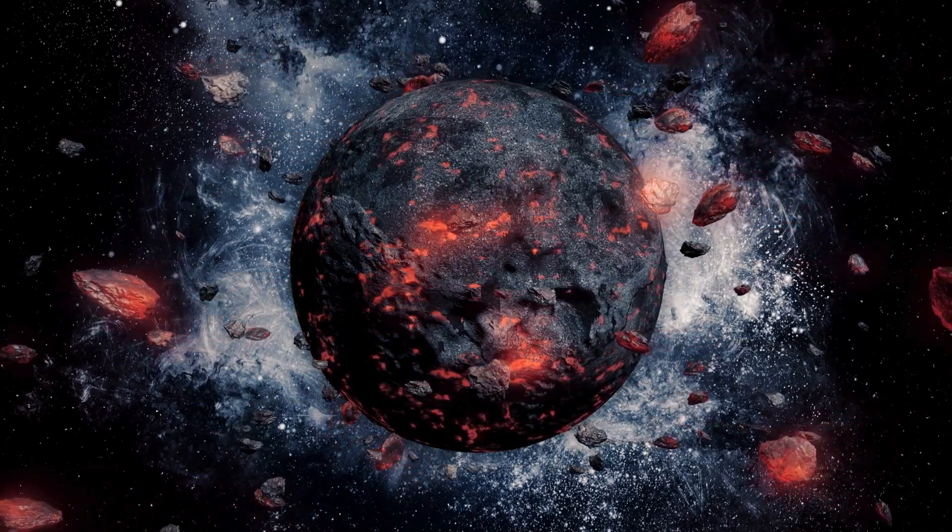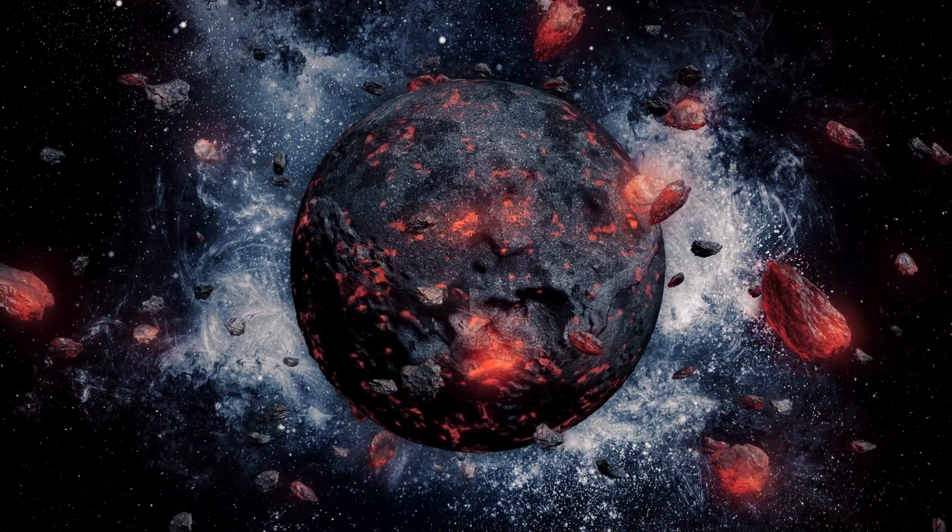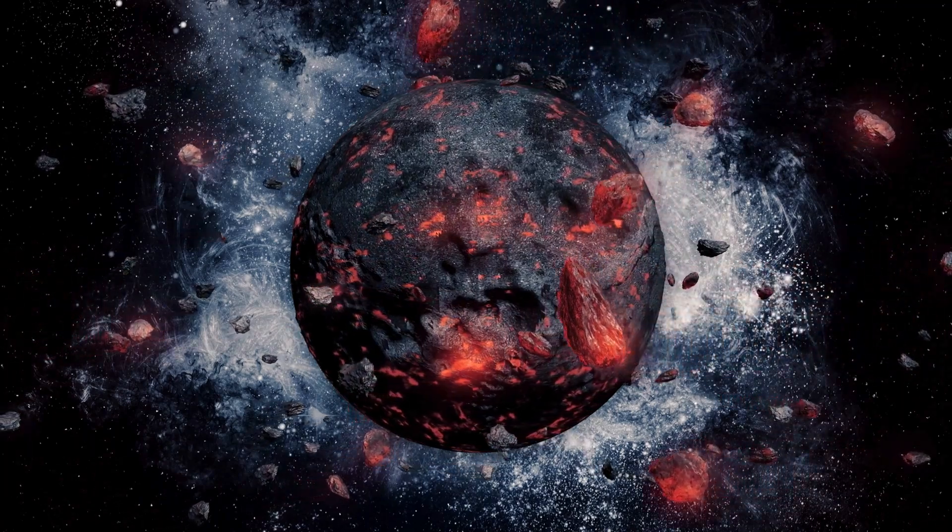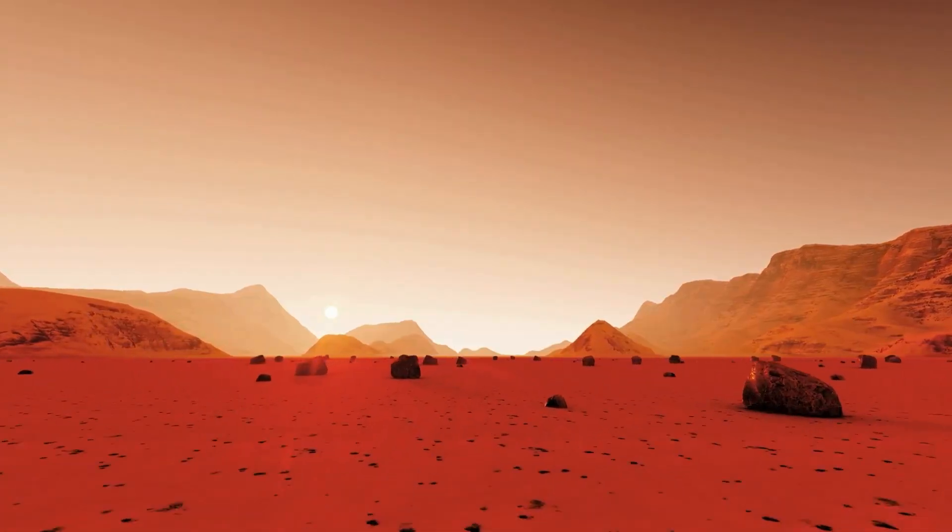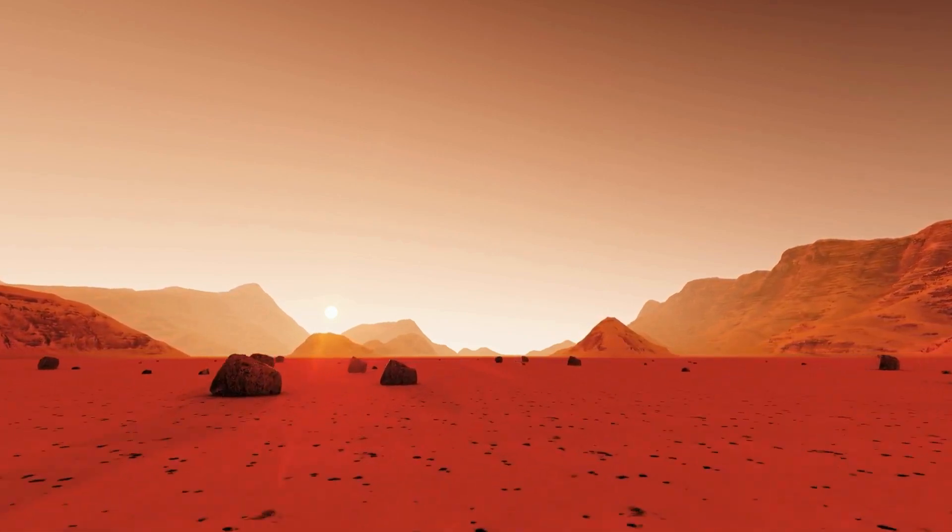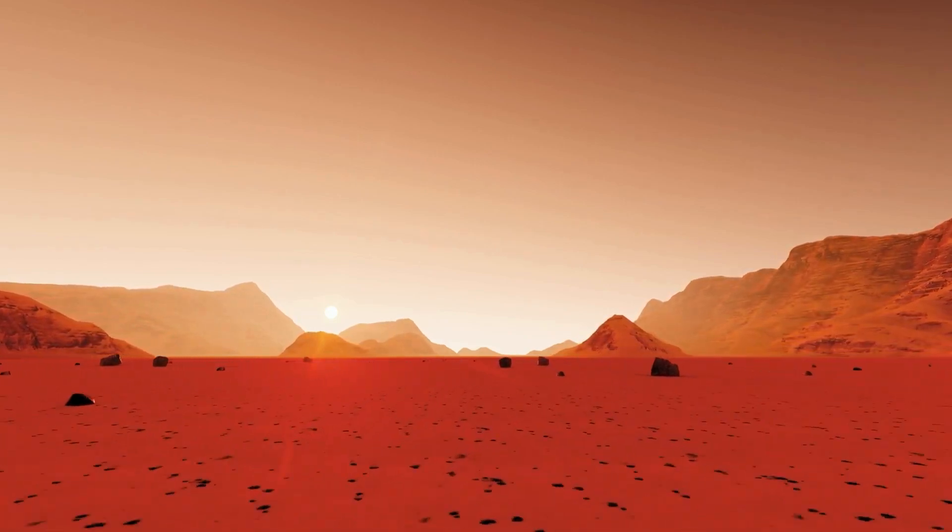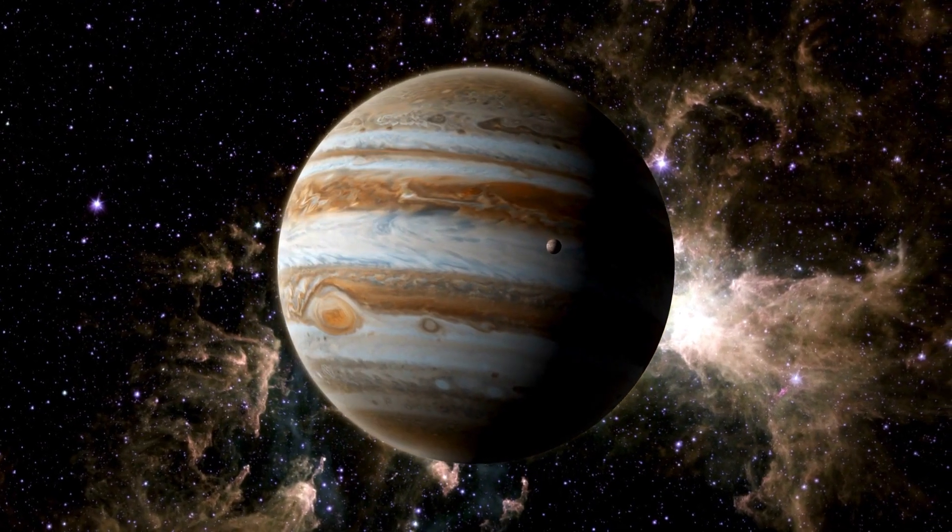But one thing is clear. This tiny planet, just 4.2 light-years away from us, is far more complex and enigmatic than we ever imagined. Could it be that Proxima b holds the key to understanding the limits of life in the universe? And if so, what does that mean for our search for extraterrestrial life?